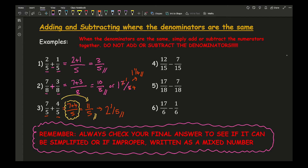Now for some subtraction questions. For question 4, the denominators are both 15, so I've got 12 take away 7 over 15, which is 5 over 15. I check to simplify: what goes into both 5 and 15? That's 5, giving a final answer of 1 third.